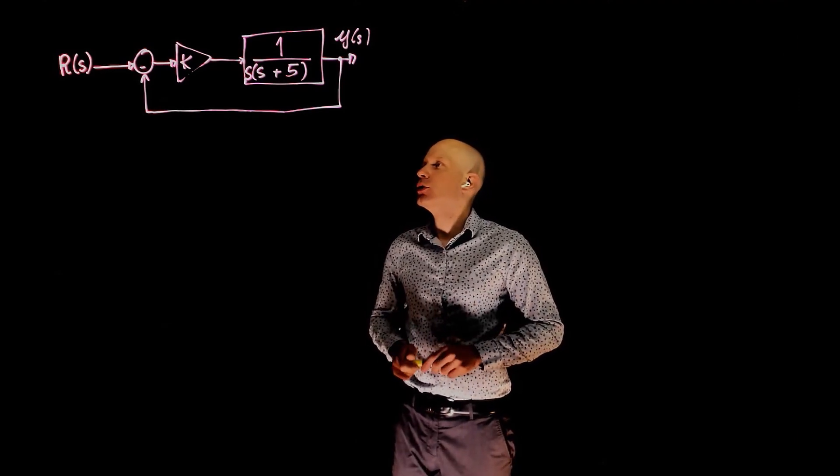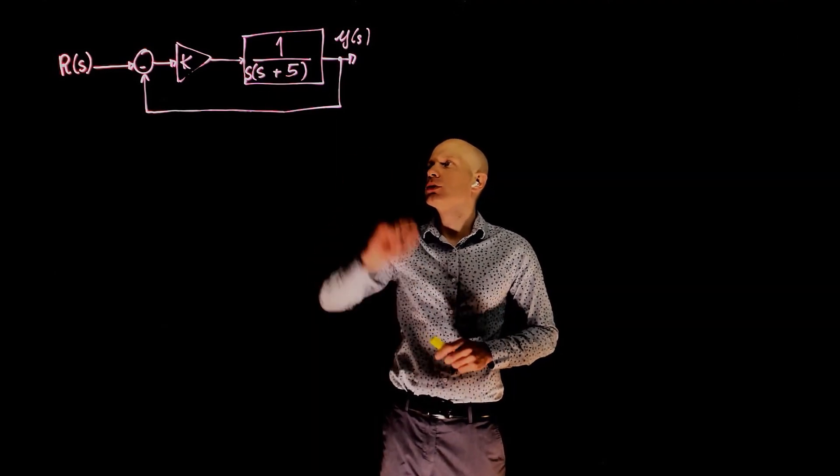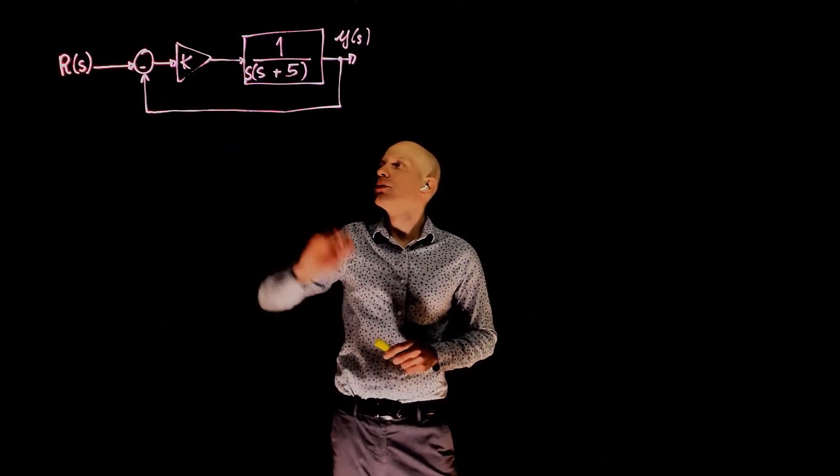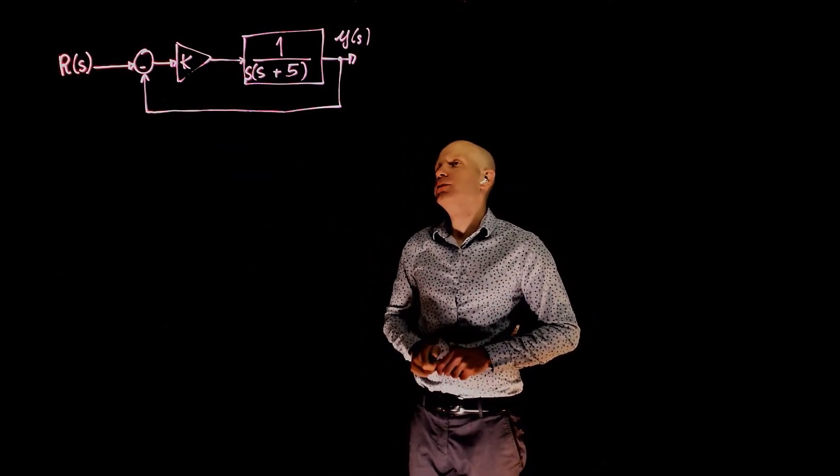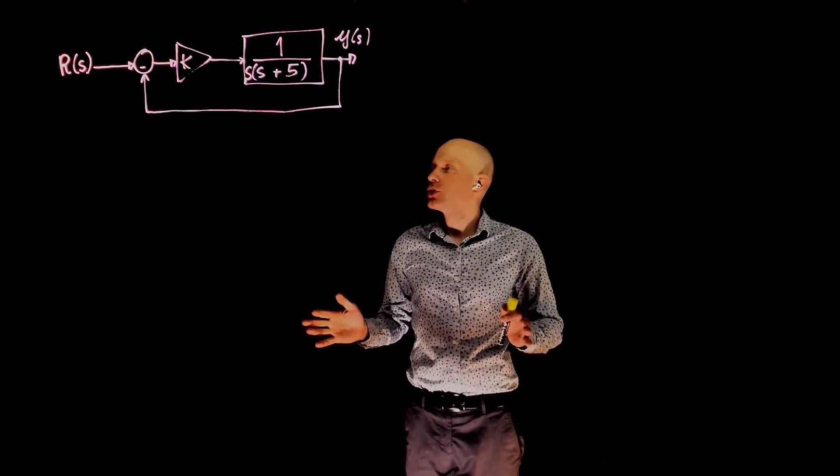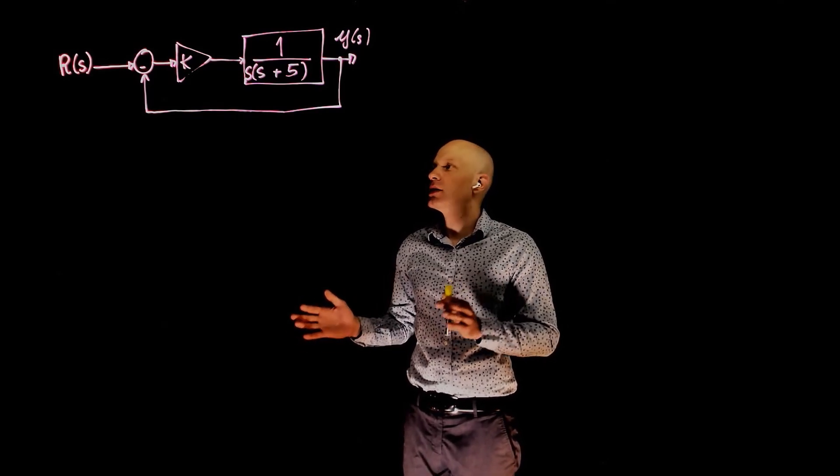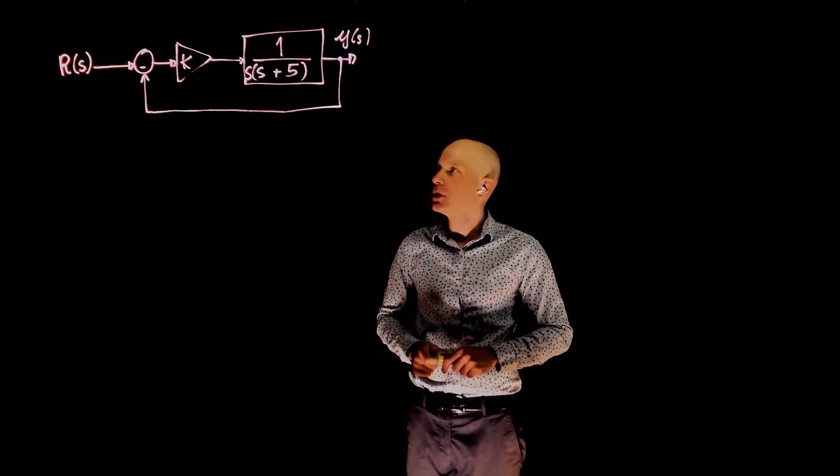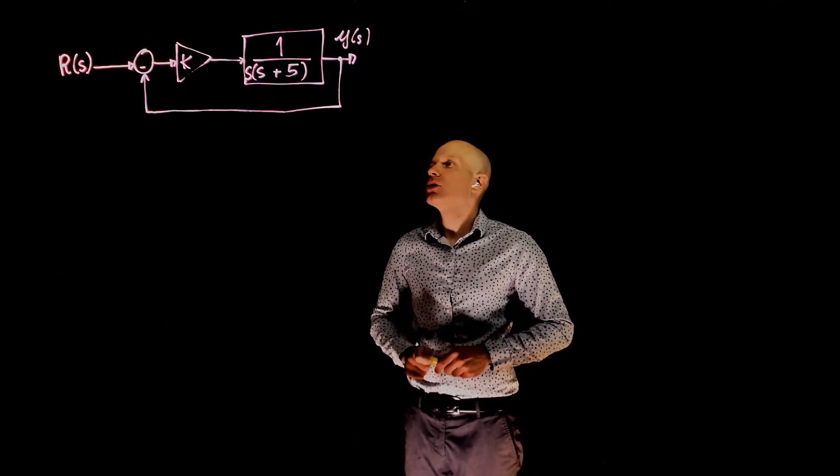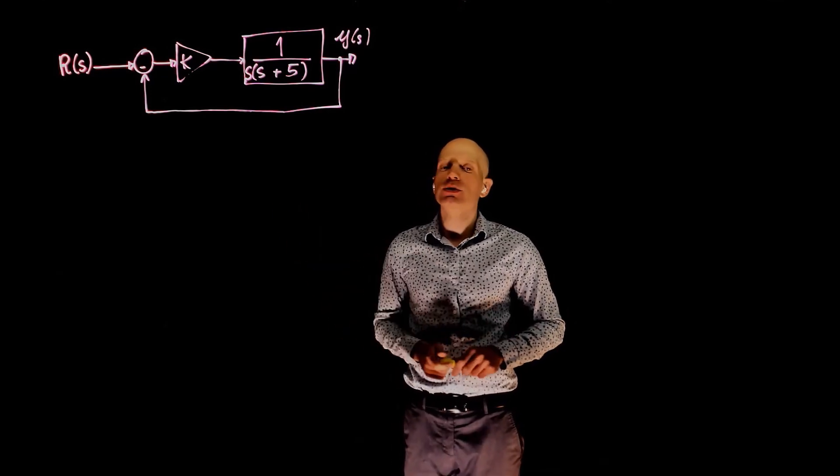Here we have another example of a unit feedback loop. This is the plant you are trying to control, and you have a simple proportional gain here. We have two questions to answer. The first one is the steady state error to the ramp input of R of S, and the second one is the value of k that results in no overshoot.